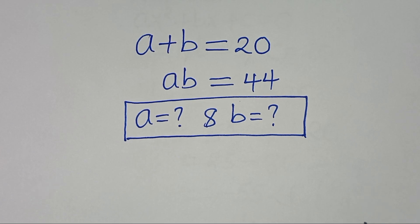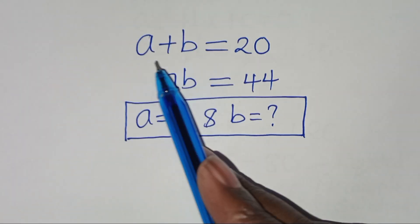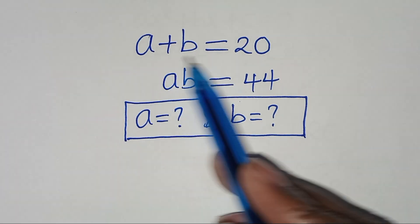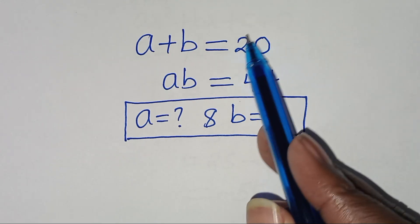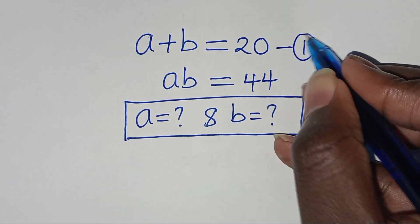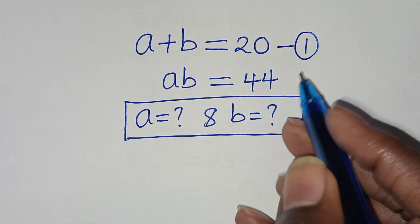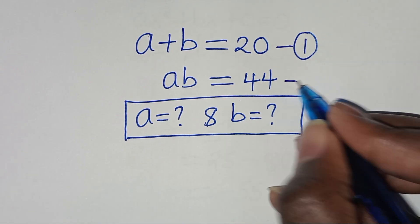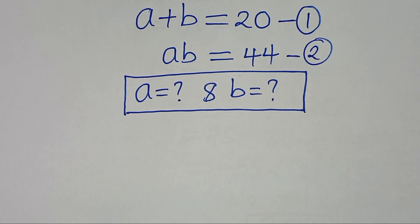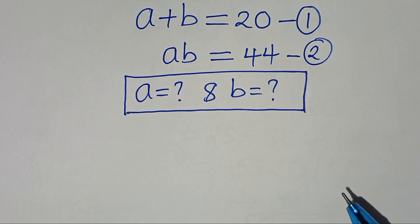Hello everyone, you are welcome to solve this nice algebra problem. We have A plus B equals 20 — we can call this equation 1. A times B is equal to 44 — let's call this equation 2. So what is the value of A and what is the value of B?